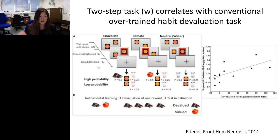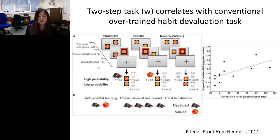Studies have compared the two-step task with an overtraining and devaluation task using food reward devaluation, most closely approximating rodent studies. The more goal-directed a subject is, the more sensitive they are to devaluation, suggesting a correlation between the conventional overtrained habit task and the two-step task.